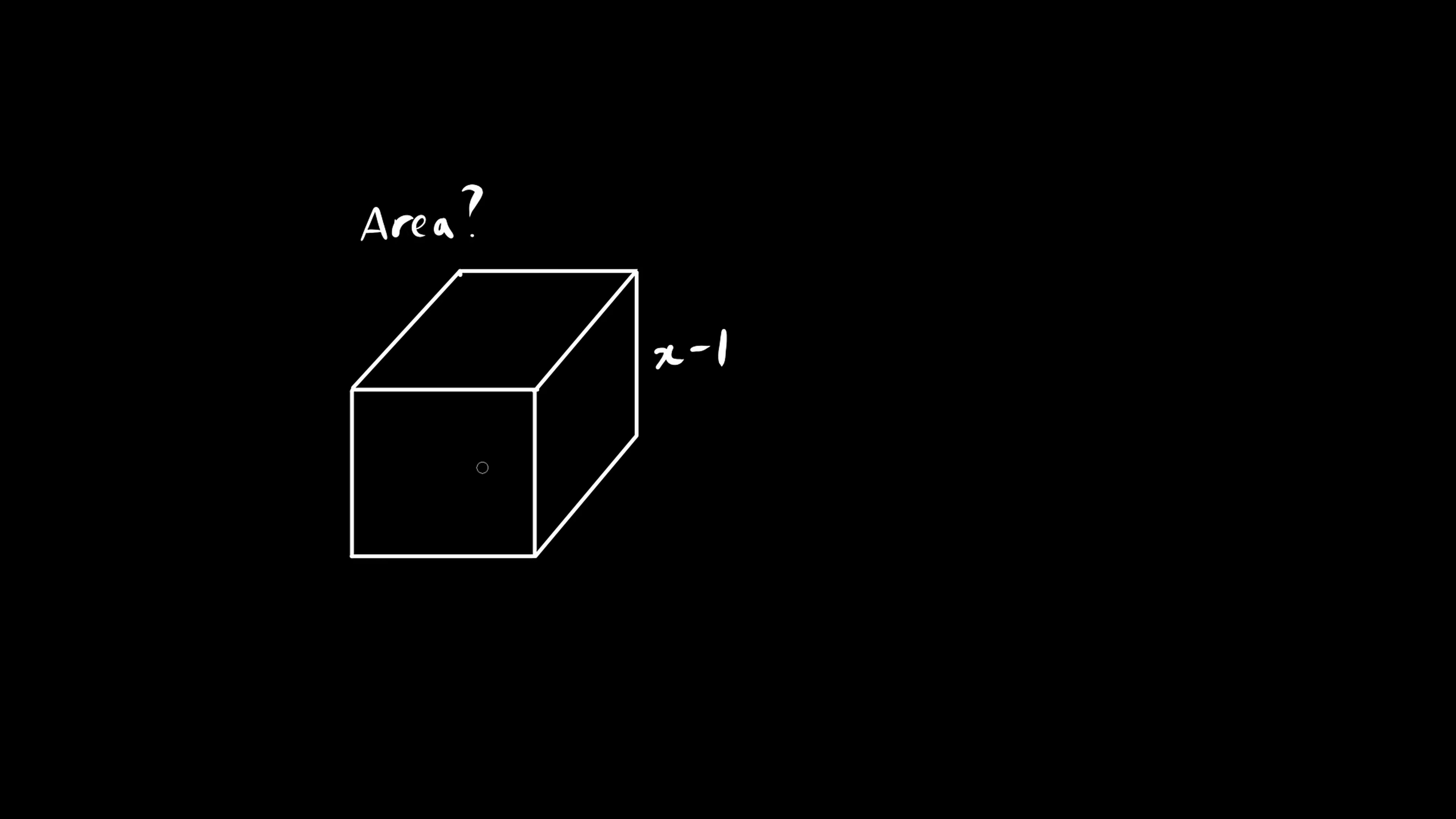Let's find the area of this cube, including the bottom. One side is x minus 1, and we know that there are six sides. If this is a cube, each side is the same.